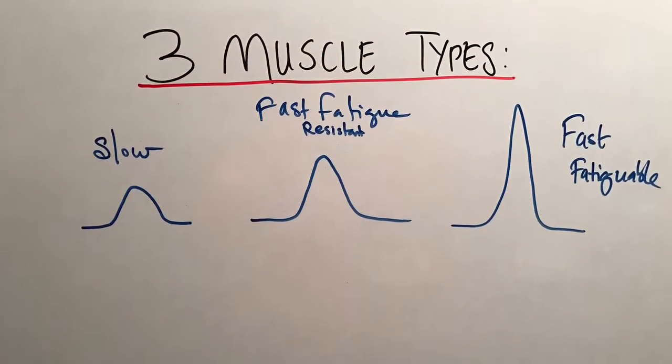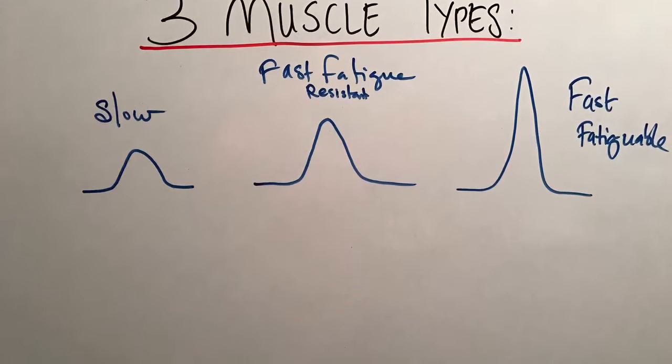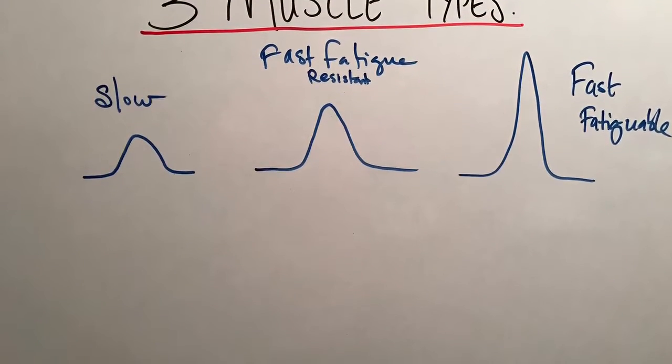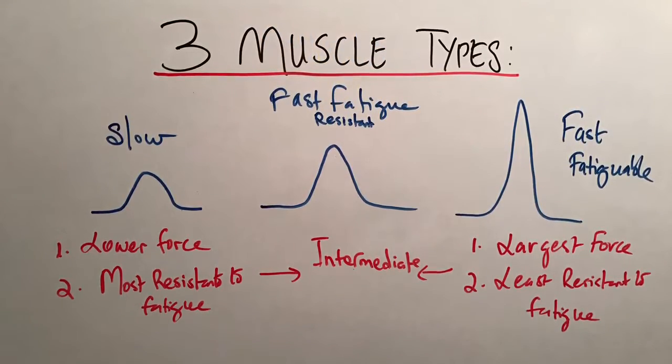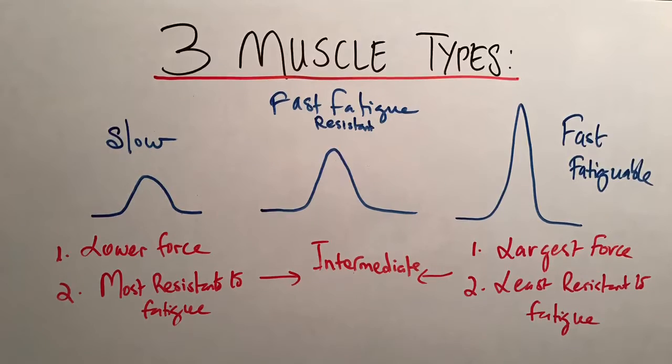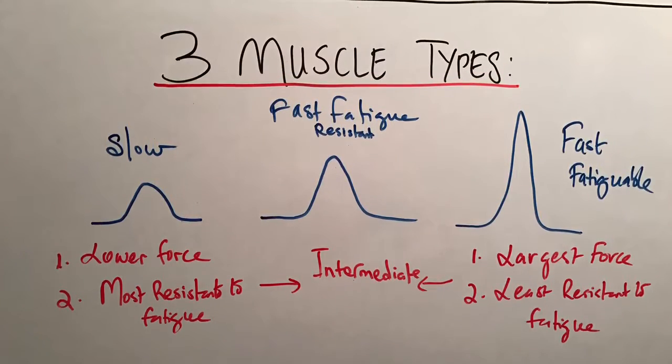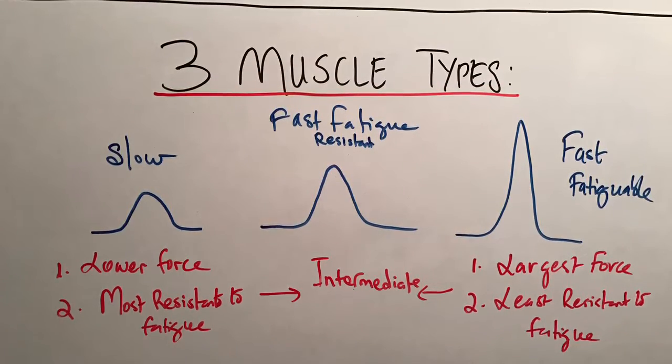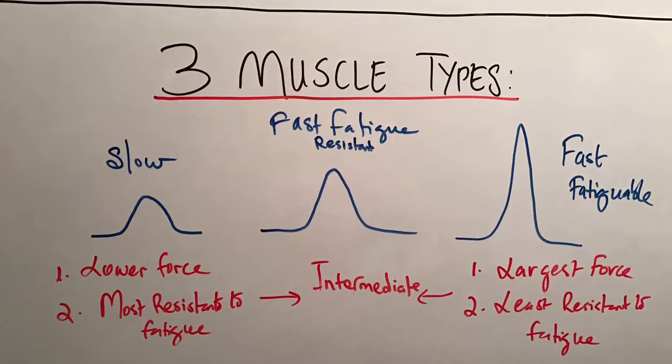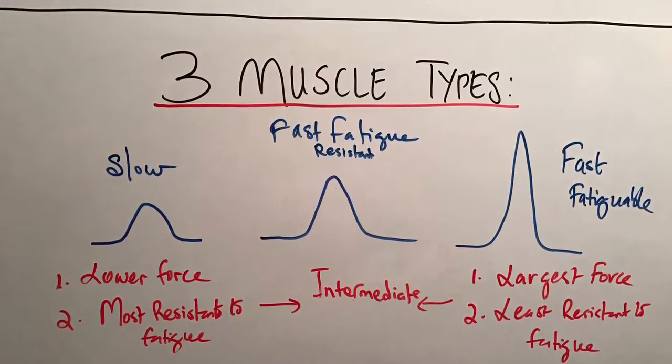As the name implies, the slow fibers will respond slowly to motor neuron activation, will have lower force generation capacity compared to their fast fatigable counterparts, and are the most fatigue resistant. The fast fatigue resistant fiber is intermediate in its response to activation and in its resistance to fatigue.